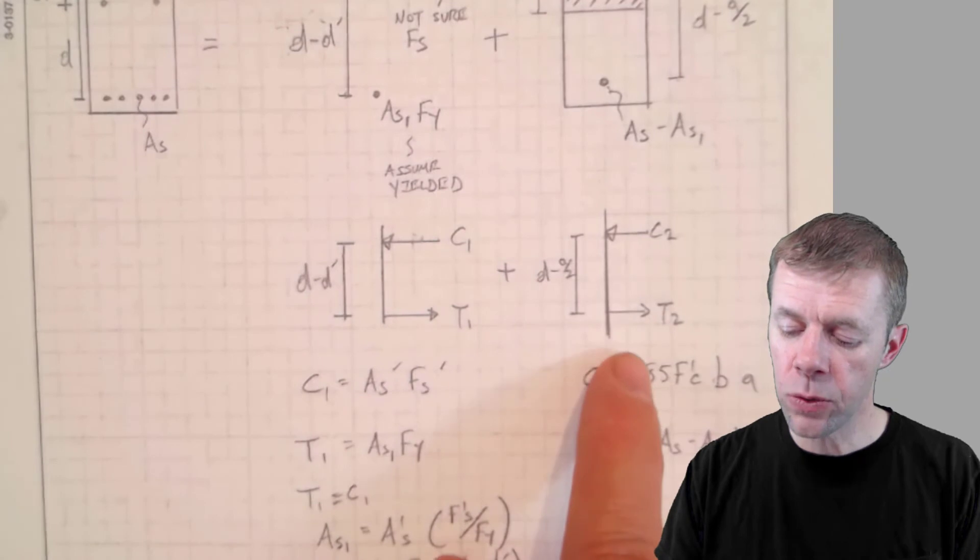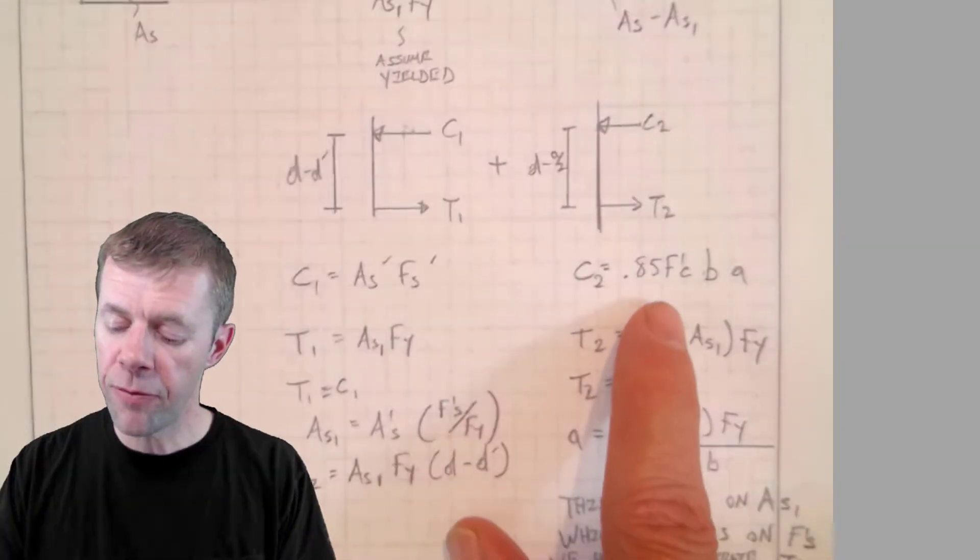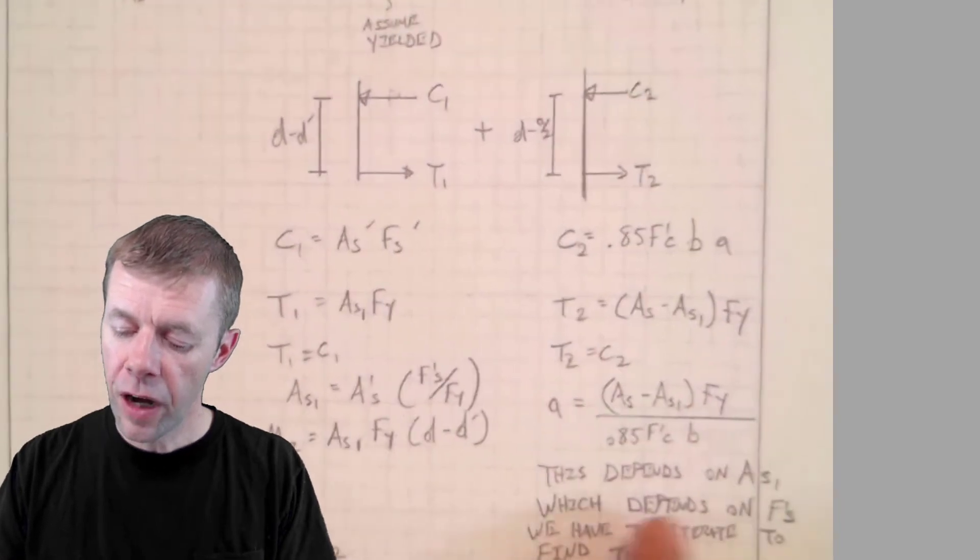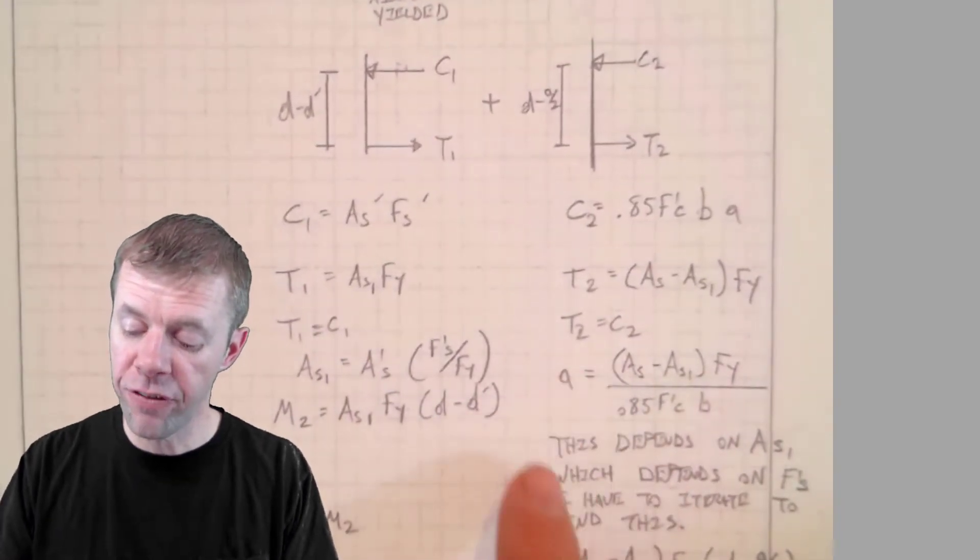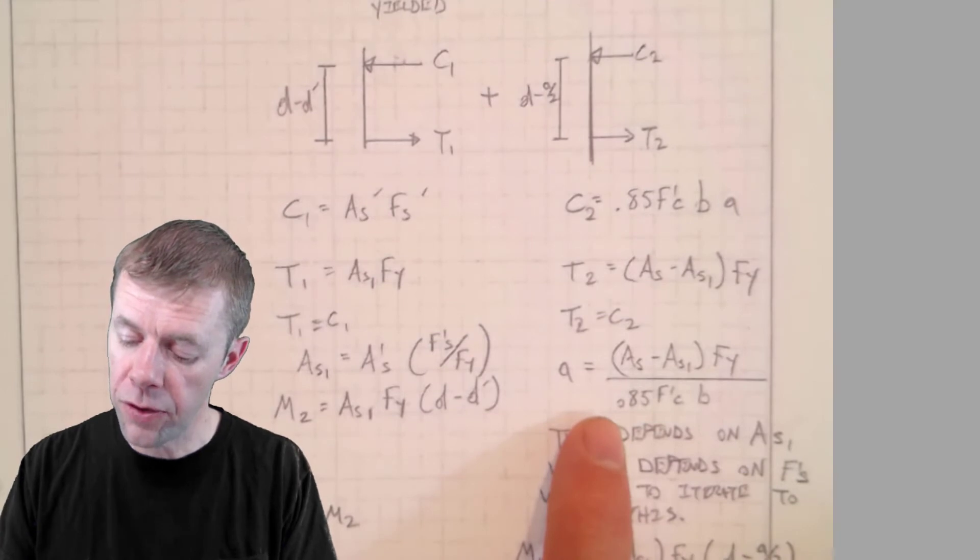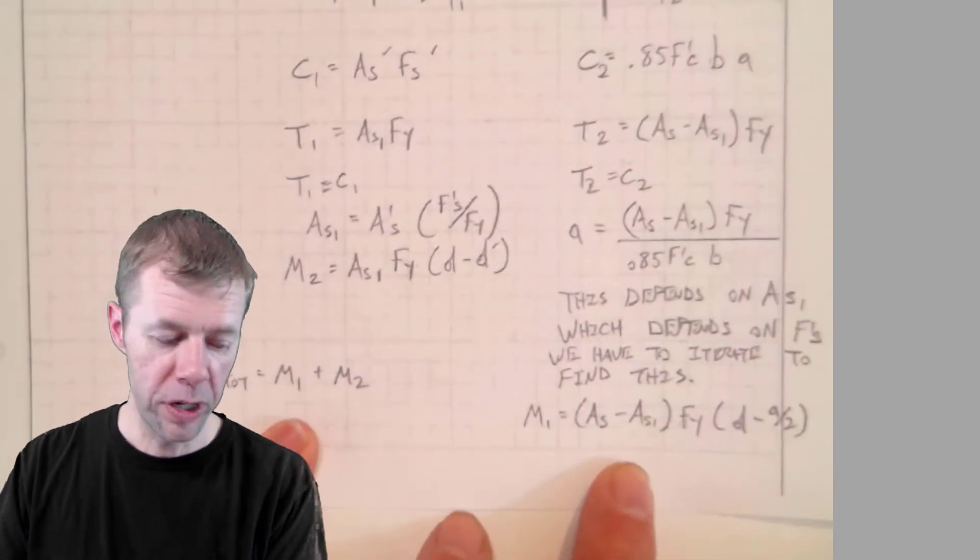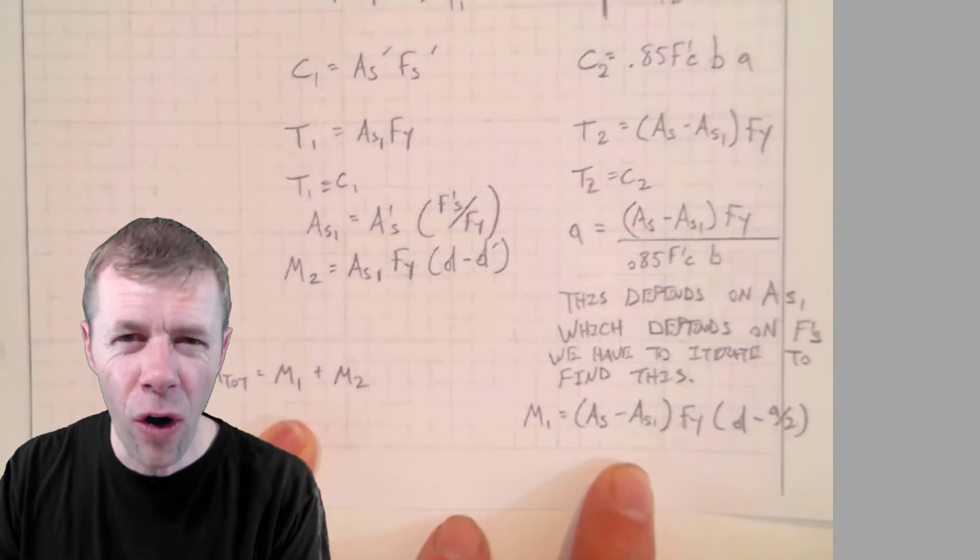Find the compression resultant, find the tension resultant, our 0.85 F'C B A, find our tension, find what our tension has to be equal to our compression, find what our depth of our compression block is, and find our moment and ultimately we add these two together. Not that hard, right?